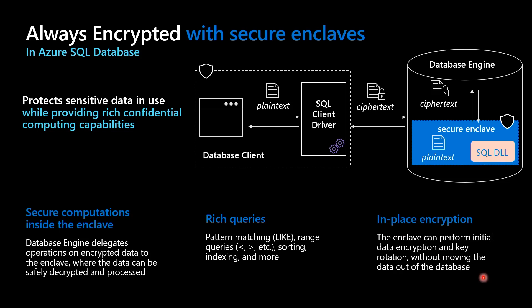On top of that, we also can use in-place encryption. If you want to do an initial encryption on a column, previously we had to extract all the data outside of the database, do the encryption, and then push it back in. This is not necessary anymore because now we can just use the enclave for that — the data stays inside the database. The engine handles the move to the enclave, so it's much faster.